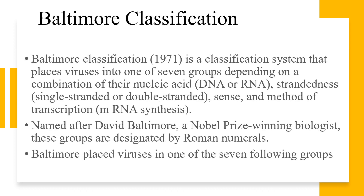In 1971, Baltimore developed a system of classification that places viruses into one of seven groups depending on a combination of their nucleic acid — DNA or RNA — viral strandedness (single-stranded or double-stranded), sense of the virus (positive or negative sense), and its method of transcription. These groups are designated by Roman numerals. I have made a separate video explaining the Baltimore classification, so you can check that.